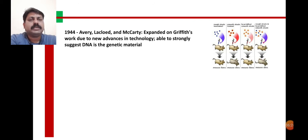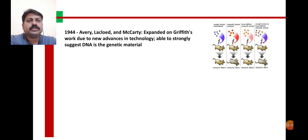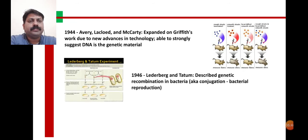The work of Griffith was further extended by Avery, MacLeod, and McCarty in 1944. They continued Griffith's work and were able to prove that DNA is the genetic material. Then Lederberg and Tatum described genetic recombination in bacteria.